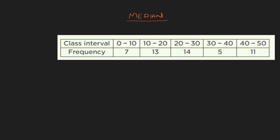Let's look at this data here. The class intervals are: 0 to 10, 10 to 20, 20 to 30, 30 to 40, and 40 to 50. The corresponding frequencies are 7, 13, 14, 5, and 11. This is the frequency column.